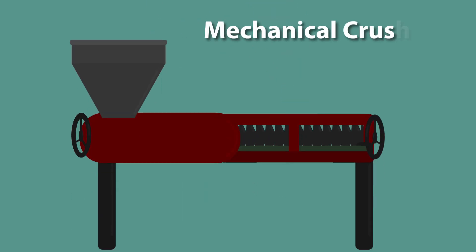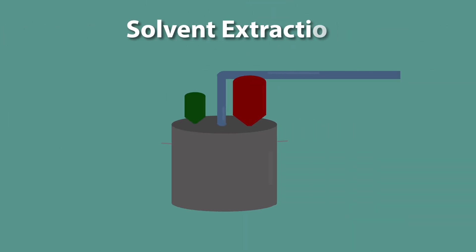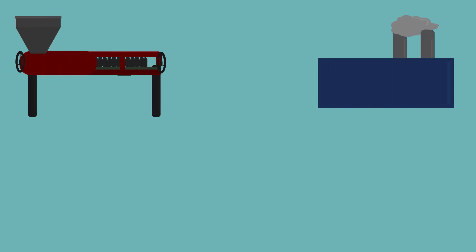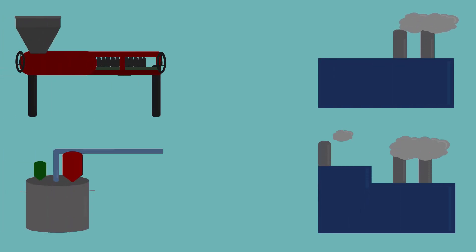Oil is obtained from oilseeds by two techniques: mechanical crushing and solvent extraction. Mechanical crushing is preferred for smaller plants, and solvent extraction is common in large facilities.